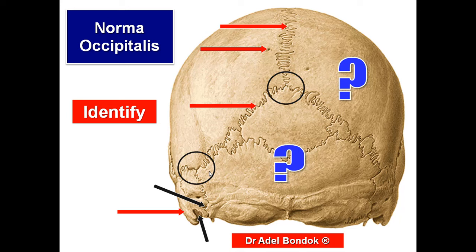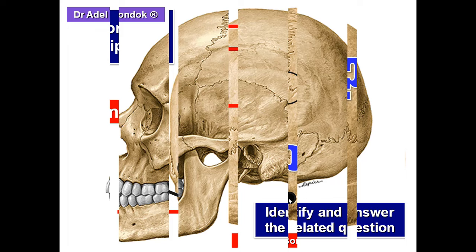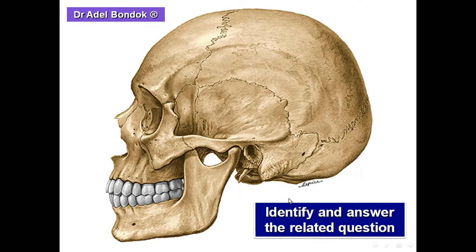This area is the asterion — the site of the posterior lateral fontanelle in the newborn skull. This projection is the external occipital protuberance.